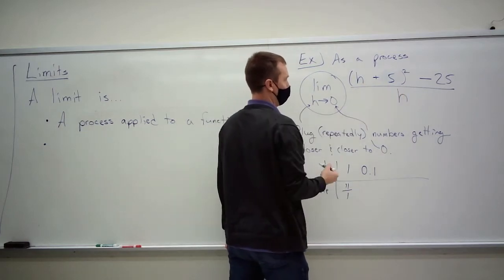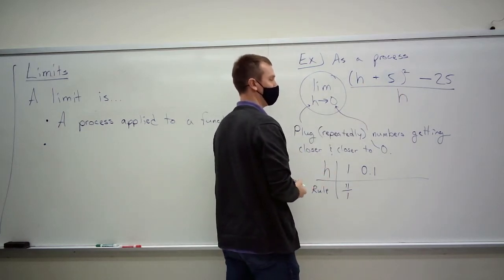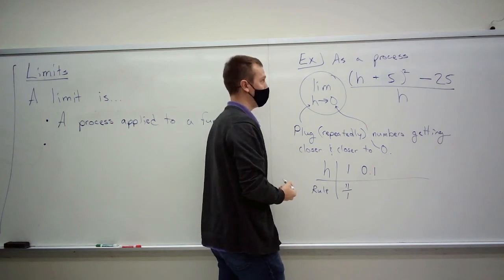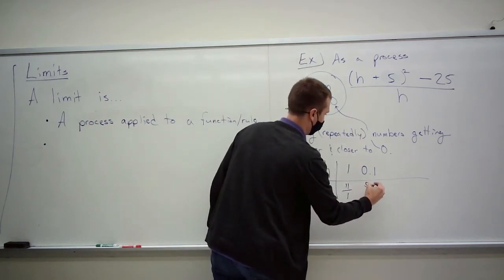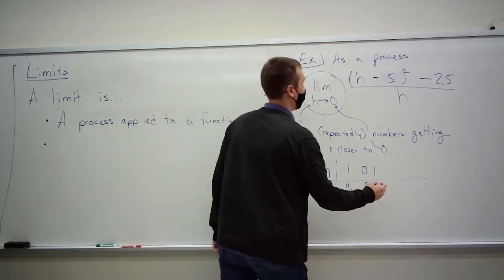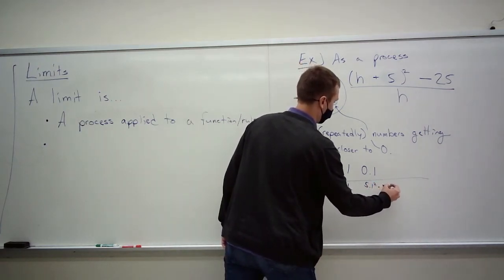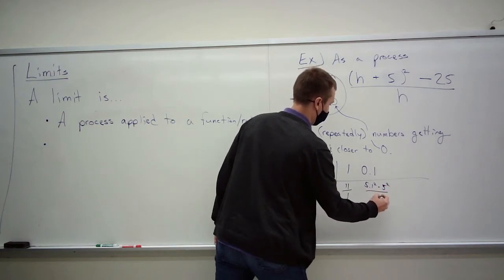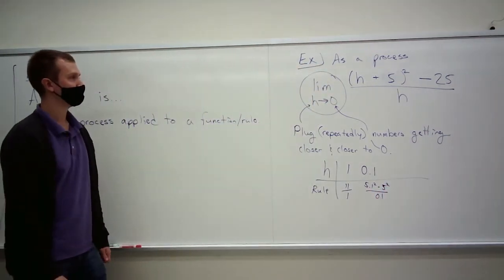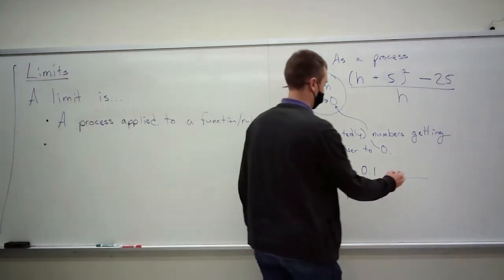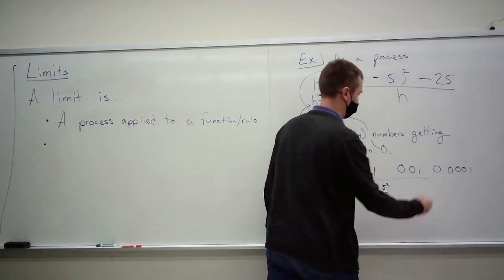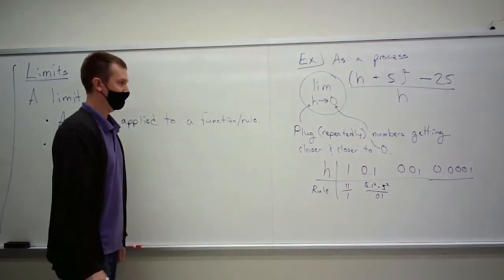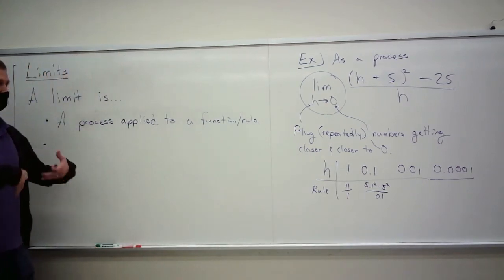So I plug in 0.1 and I get 5.1 squared — I don't know what that is, but it's a little bit bigger than 25. It's 5.1 squared minus 25 — which is 5 squared — divided by 0.1. We just keep doing this. You can plug in several numbers in this process. And so that's what a limit is.